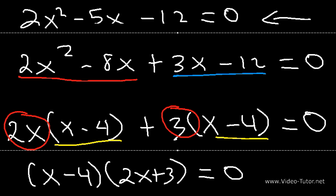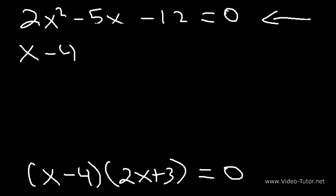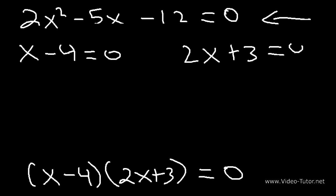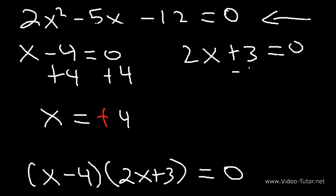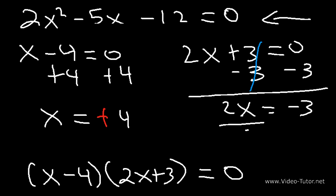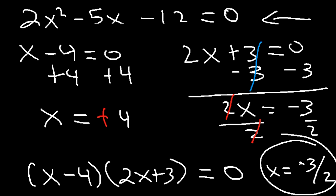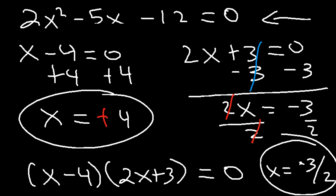To solve for x, set each factor equal to 0: x minus 4 equals 0 and 2x plus 3 equals 0. Adding 4 to both sides gives x equals positive 4. For the other, subtract 3 from both sides to get 2x equals negative 3, then divide both sides by 2: x equals negative 3 over 2. These match the answers we got using the quadratic formula. So there are multiple ways to solve a quadratic equation — you can factor it, use the quadratic formula, or use the quadratic formula to factor the expression. You have options. Thanks for watching, and have a great day.